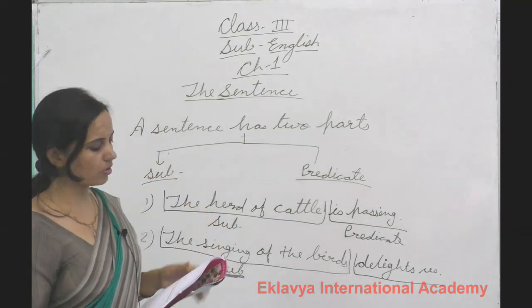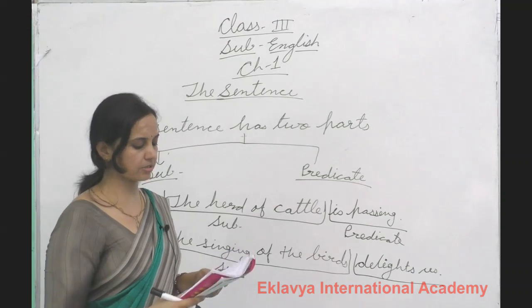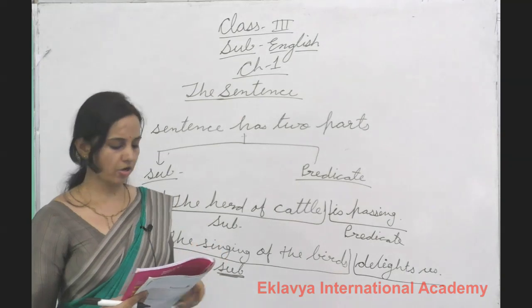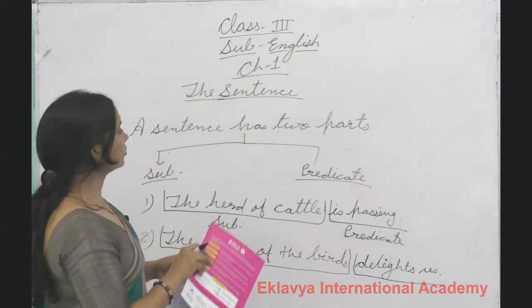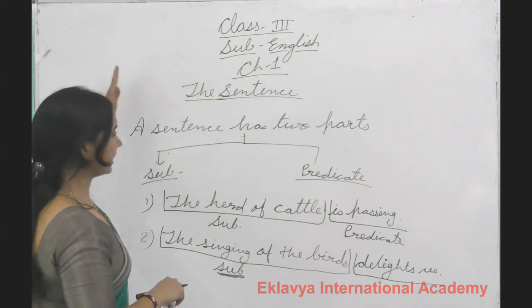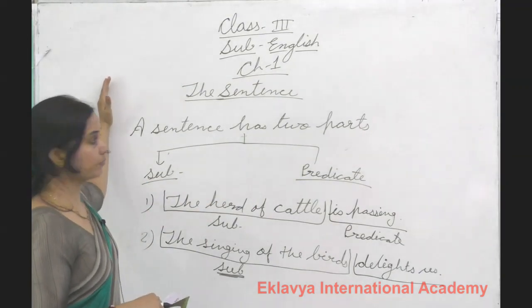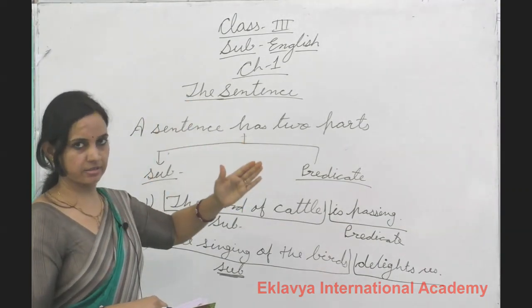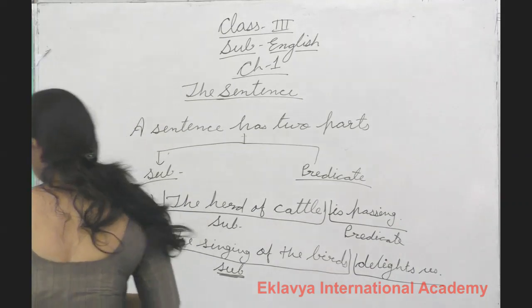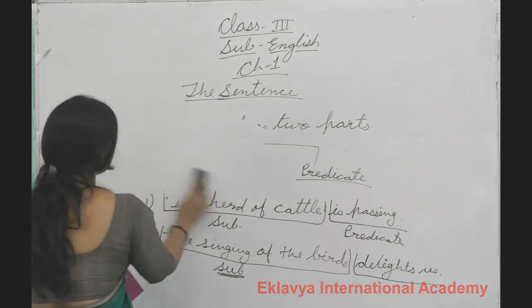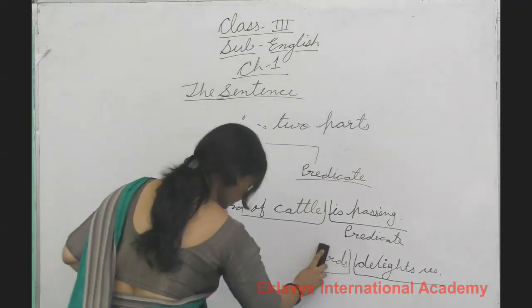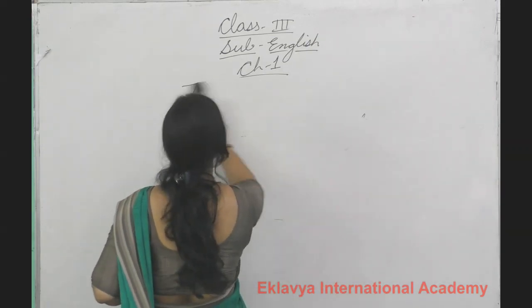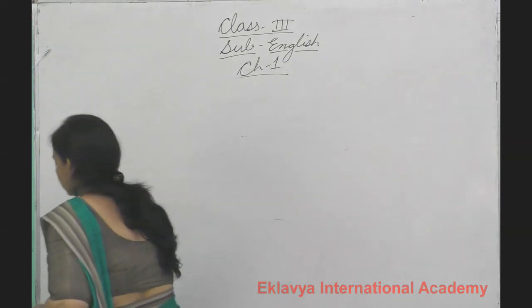The second exercise in your book says: given below are groups of words — tick if it is a sentence and cross out if it is not. A sentence is one which gives us complete sense. That is called a sentence.